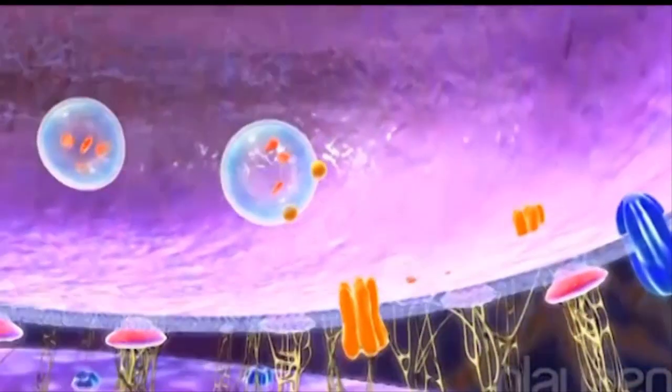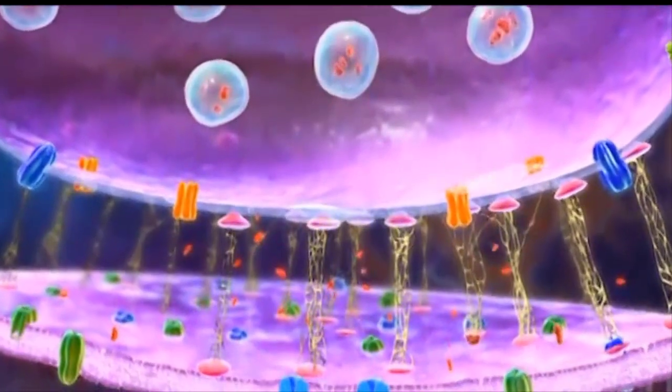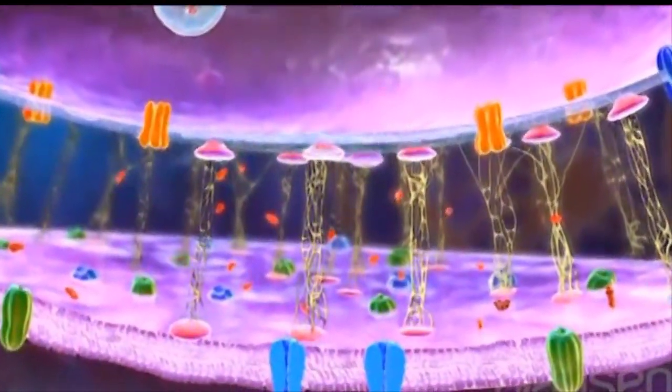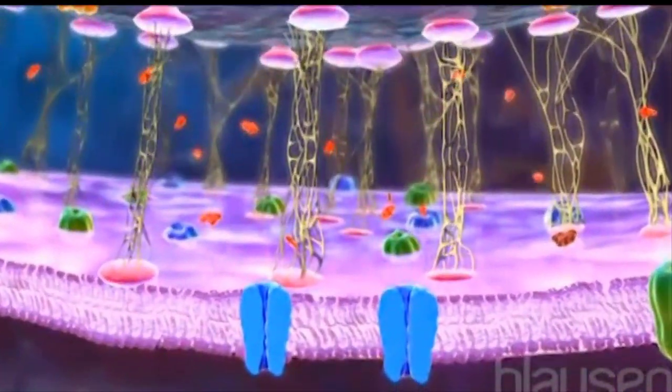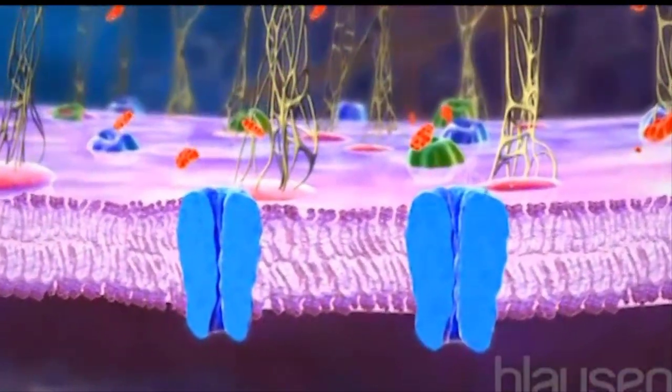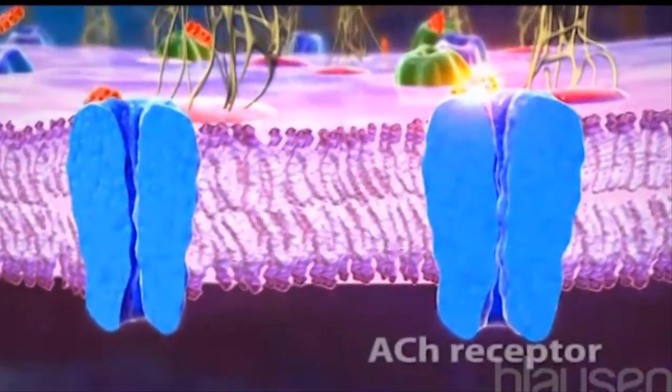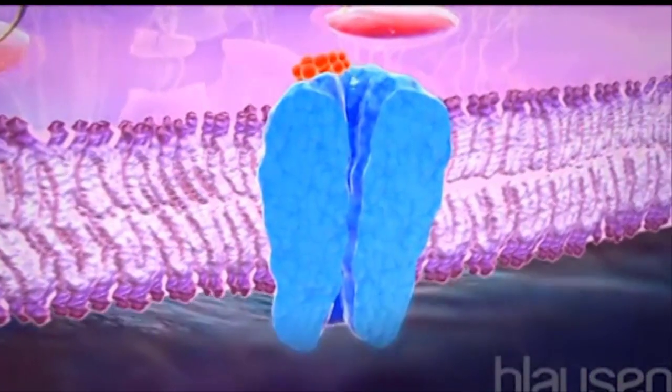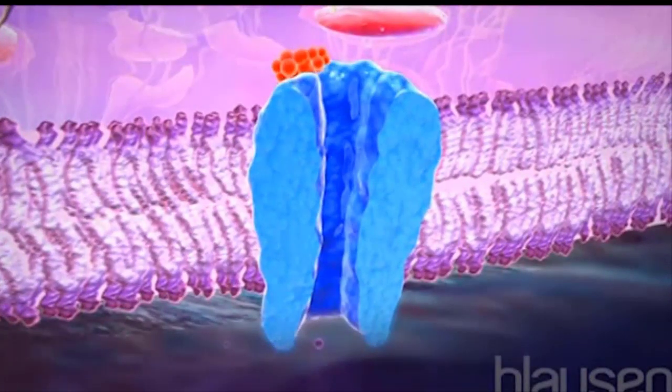This leads to exocytosis, which releases the acetylcholine into the synaptic cleft. Acetylcholine molecules then diffuse across the synaptic cleft and bind to ACH receptors in the external membrane of the postsynaptic neuron.